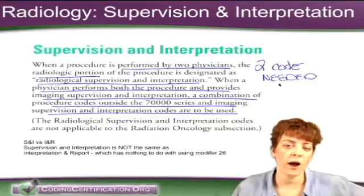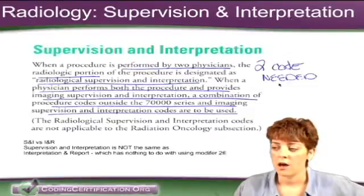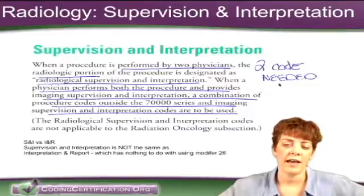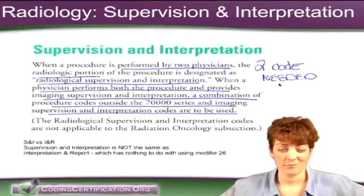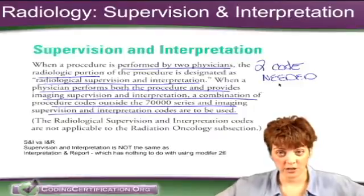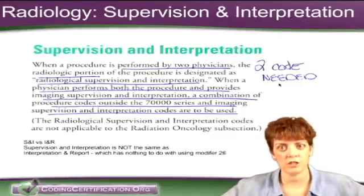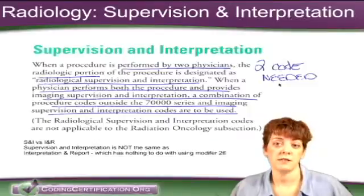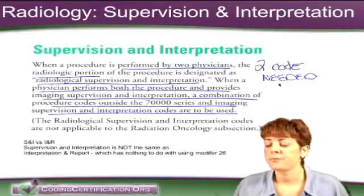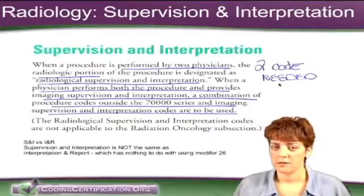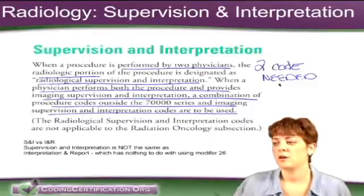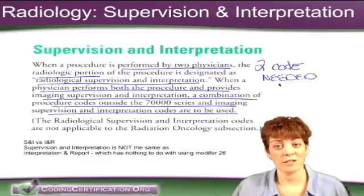Years and years ago, way before I even started studying coding, apparently there were single codes that told the story of, say, starting a catheter and manipulating it up to a point to inject dye and imaging. Really that's two pieces — a surgical piece, cutting into the patient and inserting and manipulating a catheter, and then the radiology piece. An interventional radiologist would do both pieces, that's why they're called an interventional radiologist. But they didn't always do both pieces — sometimes you had a surgeon doing the surgery piece and the radiologist doing the supervision and interpretation piece.